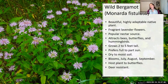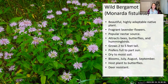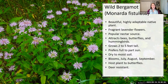Wild bergamot — you might know it as monarda. There are a lot of cultivars at garden centers, but our native straight species is wonderful. It's a very popular nectar source for bees and butterflies, and I've seen hummingbirds at it too. It can grow two to five feet tall depending on conditions. It likes full sun but will handle part sun. It can span the range between dry and moist soil, making it really adaptable. These are summer blooms going into September, and paired with any yellow flower, it's just gorgeous.